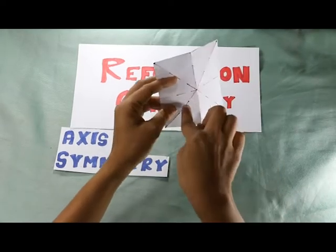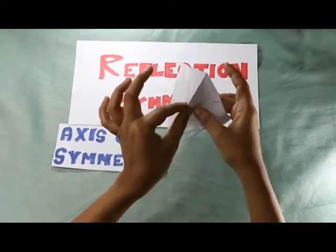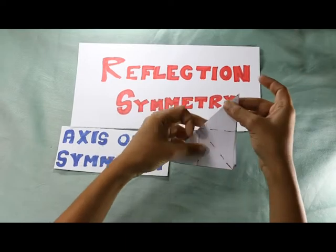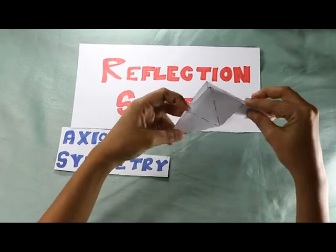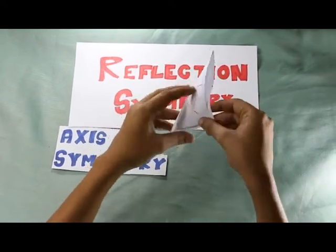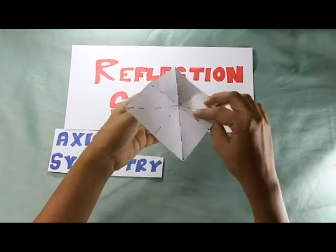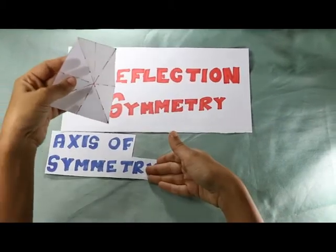The same happens when we fold the figure diagonally. As you saw, the square has many different axes of symmetry.